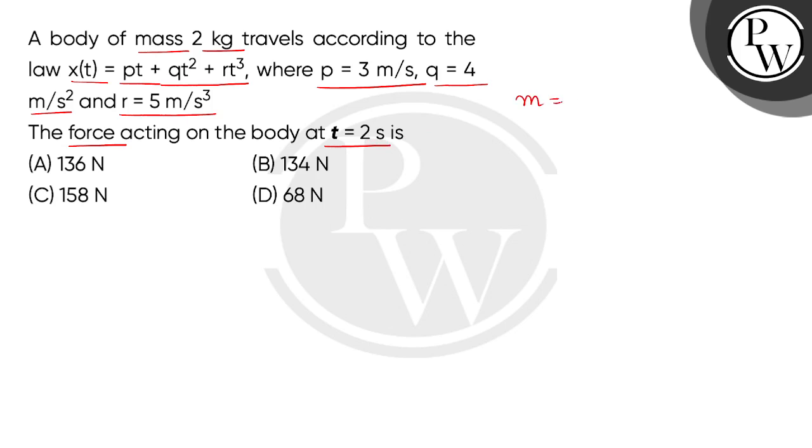Here given is a body of mass as 2 kg. Now, the displacement equation given is x(t) in terms of time: pt + qt² + rt³.